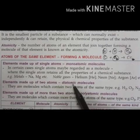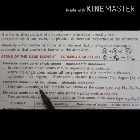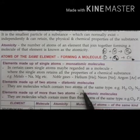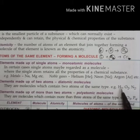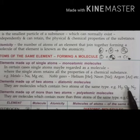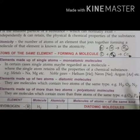Next are diatomic molecules. These are molecules which contain two atoms of the same type. For example, H₂ has atomicity two and is a diatomic molecule. Oxygen is also a diatomic molecule. Nitrogen is also a diatomic molecule.